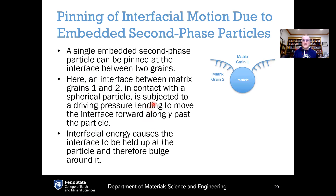Here is an example of interfacial motion that can be pinned due to the embedding of a second phase. If you have a grain on one side, a grain on the other, and some other particle incorporated between them, this embedded second-phase particle can be pinned at the interface between the two grains. An interface between matrix grains one and two is in contact with the spherical particle and subjected to a driving pressure tending to move the interface forward past the particle. The interfacial energy causes the interface to be held up at the particle and therefore bulge outward. So if you want to suppress interfacial motion, the incorporation of a second phase — such as these particles — can act to inhibit that type of motion.